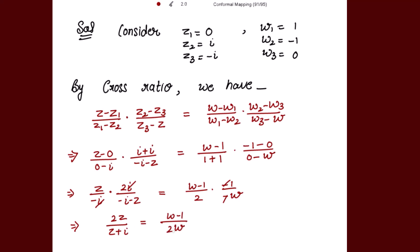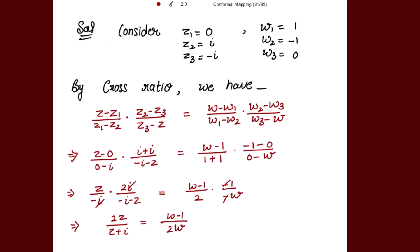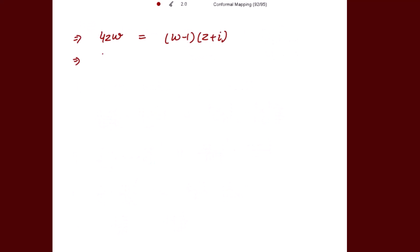Taking 2w to the other side and (z + i) to the other side, they get cross-multiplied. So we get 4zw = (w - 1)(z + i).